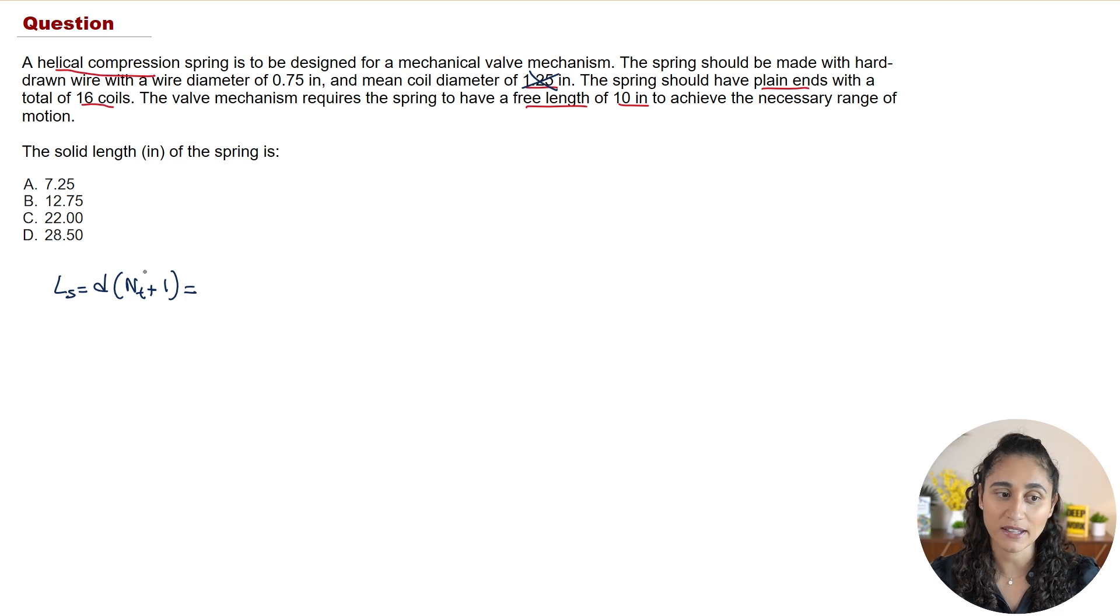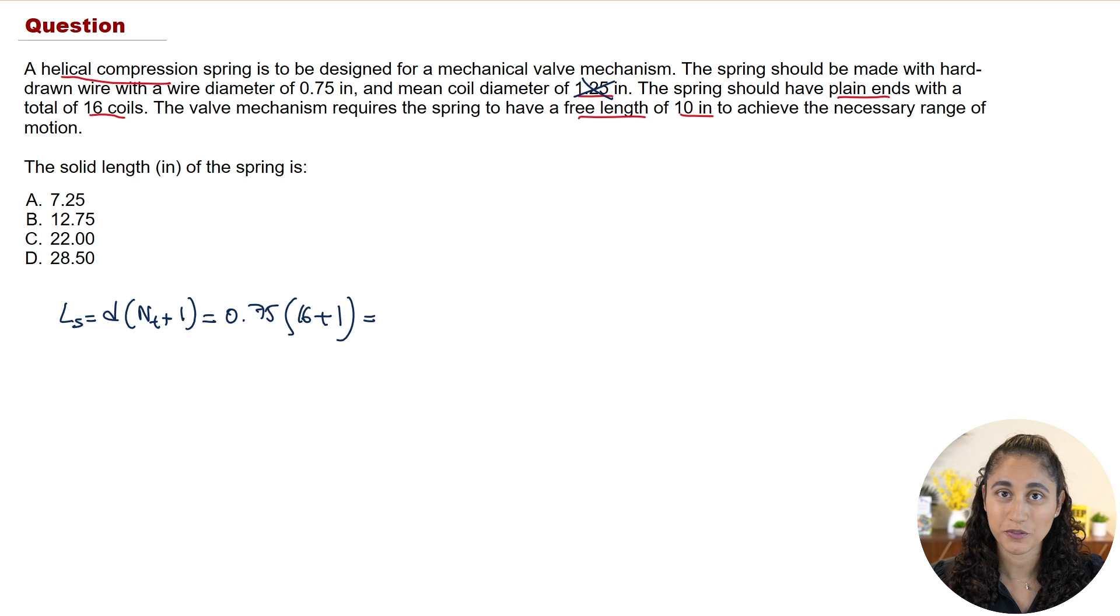So now let's go ahead and plug in the 0.75 and then we're going to multiply by Nt, so that's going to be the total number of coils which is 16, and then plus 1. And now if you plug these numbers in your calculator you're going to get 12.75 inches. So now if you take a look at the multiple choice, the answer is going to be B.